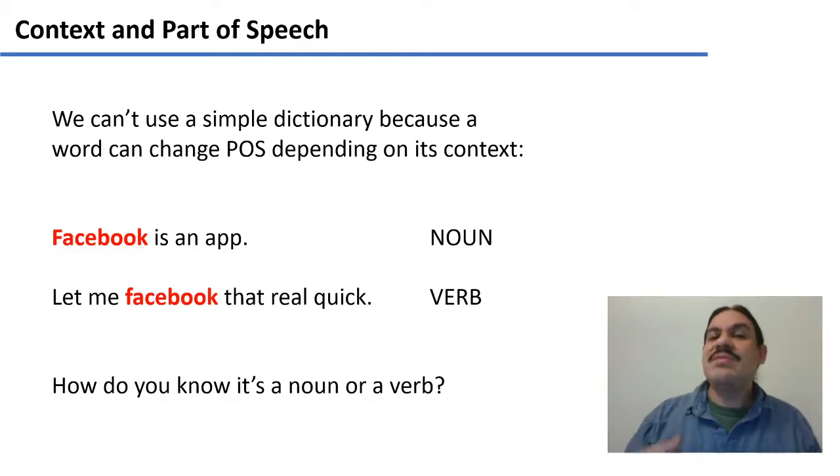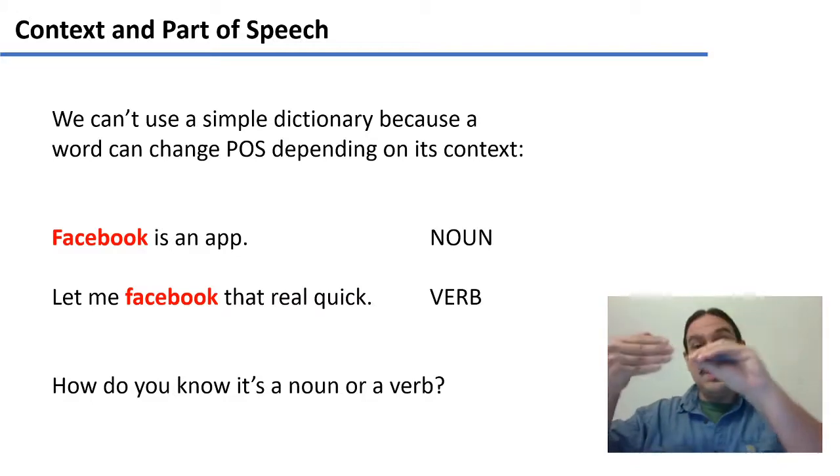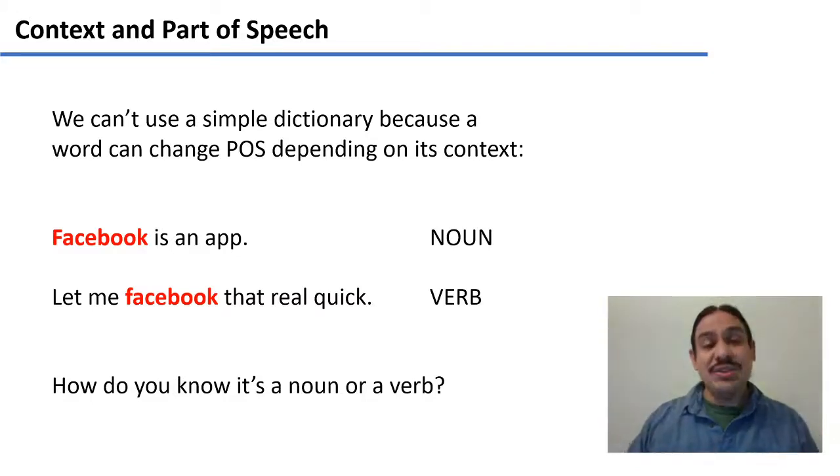But we cannot simply have something like a dictionary that has words and then their part of speech. Because in English, one word can have more than one part of speech. For example, here we have the word Facebook. Sometimes Facebook is a noun. As in the sentence, Facebook is an app. Because we could say Facebook's are an app. Singular and plural. So it behaves like the noun cat, cats. Facebook, Facebook's.